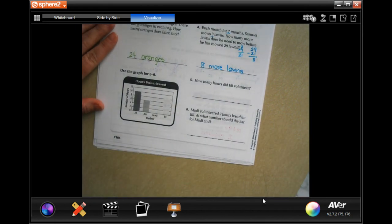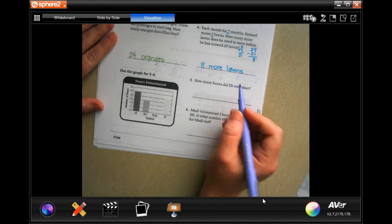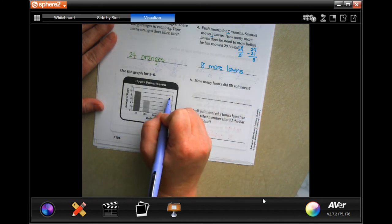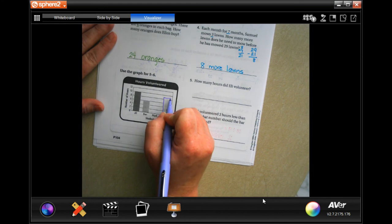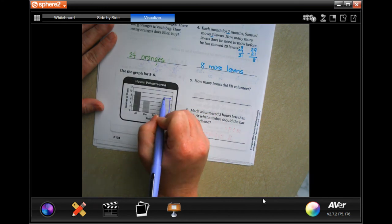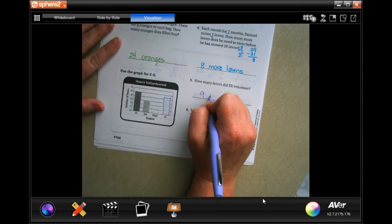How many hours did Eli volunteer? Here's Eli, and I know you guys can't really see it on there, but he's right there and he is in between eight and ten. That gives us nine.